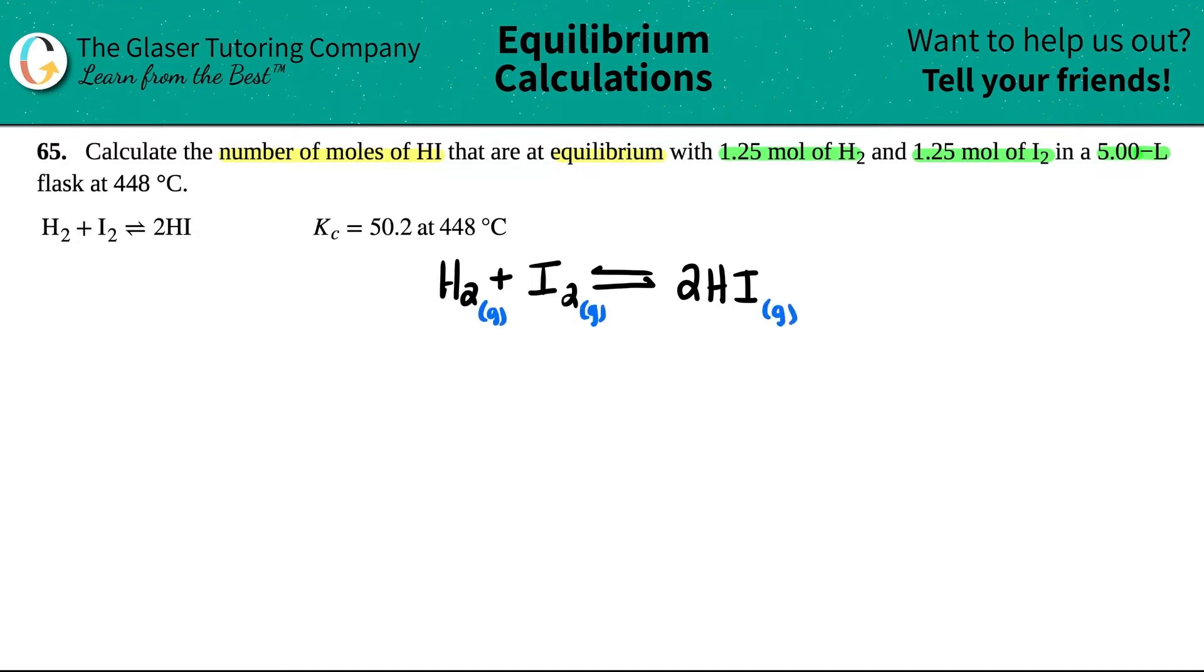Hopefully, in like a quiz or on a test, they should give you the states, especially for the equilibrium chapter, because remember, there are certain states that are not allowed in the formula. Okay, so let's write down what they gave us. So they told us that we had 1.25 moles of H2, so that's this guy. I got 1.25 moles, and they said that I also have 1.25 moles of I2, and they're basically asking for the number of moles of HI. So moles, question mark.